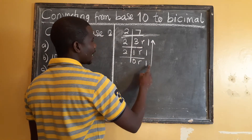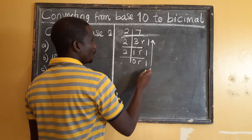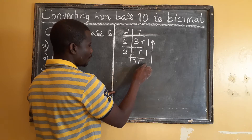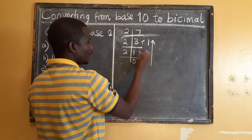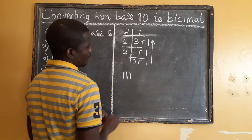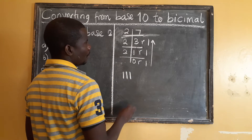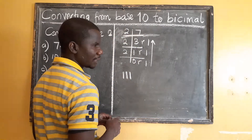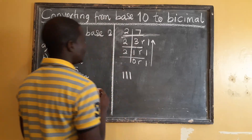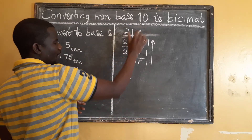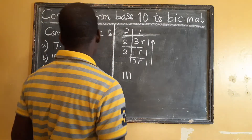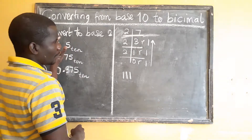Now how do we write the final answer? You start with 1, 1, and 1 — reading the remainders going upward. That is what 7 is in base 2. So when you convert 7 to base 2 it gives us 111.